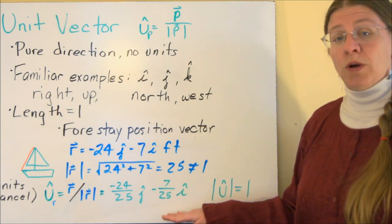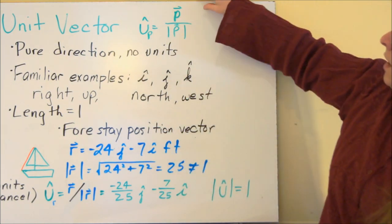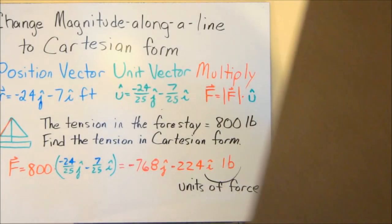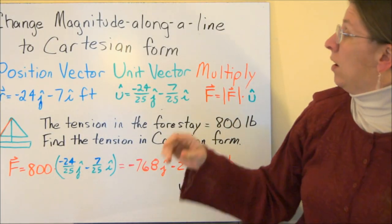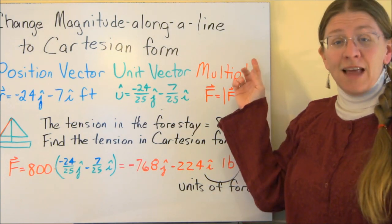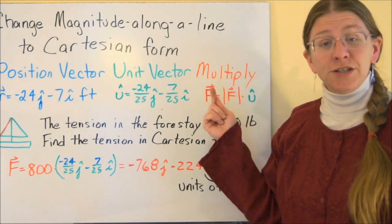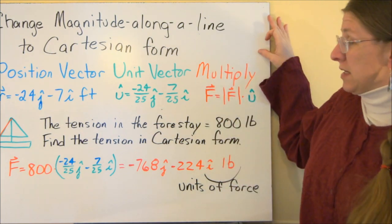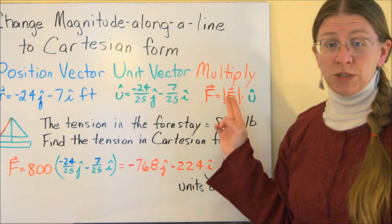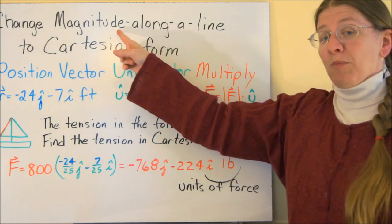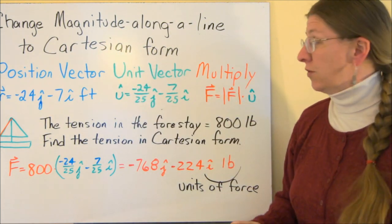So this is a place where you have a unit vector. Now, tying these all things together with what I said at the very beginning, a lot of times what we want to do is change magnitude along the line into Cartesian form. So if we're looking at this, you'll hear me say this a lot. Position vector, unit vector, multiply. That is the method for changing magnitude along the line into Cartesian form.